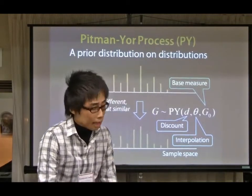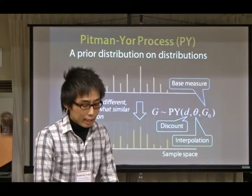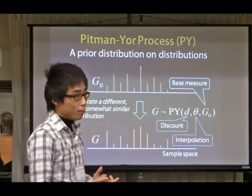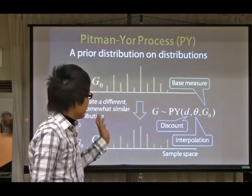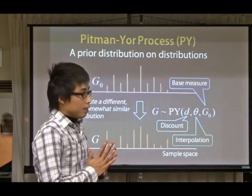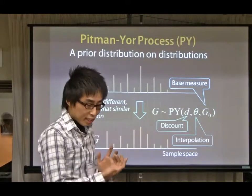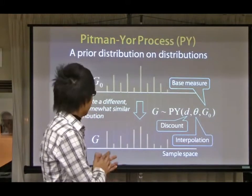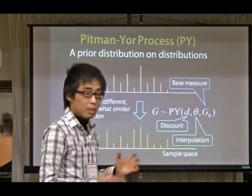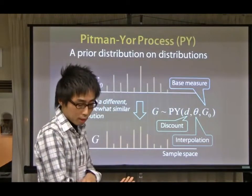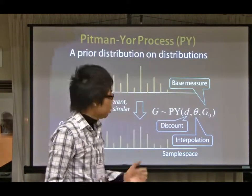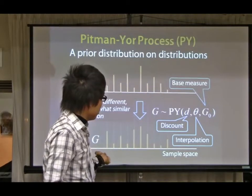First of all, we have to explain the Pitman-Yor process, which is a prior distribution on distributions. This is a very important building block for non-parametric Bayesian N-gram models. The Pitman-Yor process has three parameters: discounting, interpolation, and the base measure. The Pitman-Yor process can be understood as a black box system that takes any distribution as input and generates a different but somewhat similar distribution as output. The difference between these two distributions is controlled by the discounting parameter and interpolation parameter.